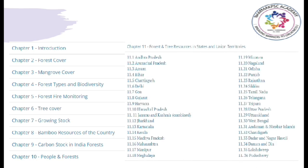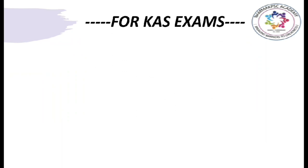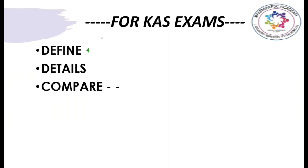We have to know the data regarding India if you are a UPSC aspirant, and in addition to India, you need to know the details regarding the state of Karnataka if you are a KPSC aspirant. So how do we approach this report for the KAS exam? It is a three-point strategy: Define, Details, and Compare. First, we study the definitions of various terms mentioned in the report. Secondly, we study the statistical data for both India and Karnataka. And lastly, we compare these values between India and Karnataka.